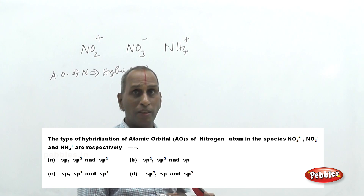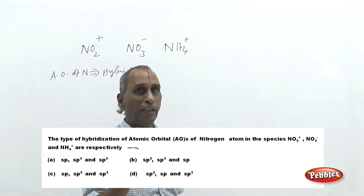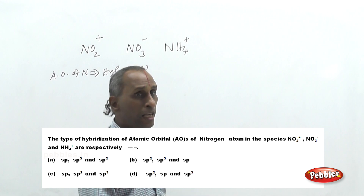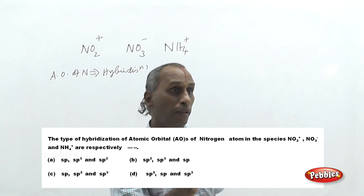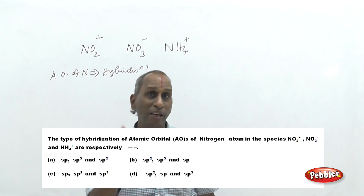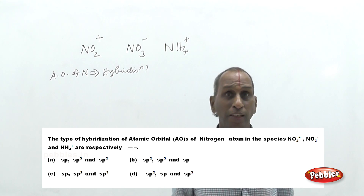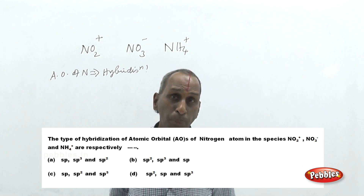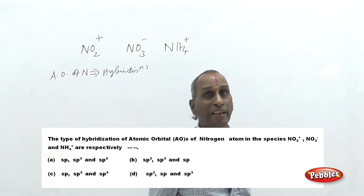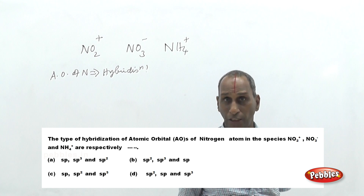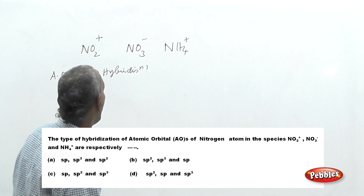The important types of hybridization are SP, SP2, SP3, SP3D, and SP3D2. If the system contains only single bonds, it is SP3 hybridized. If it contains one double bond (one pi bond), it is SP2 hybridized. If it contains two double bonds or a triple bond (two pi bonds), it is SP hybridized. We will now examine the structure of each nitrogen species.